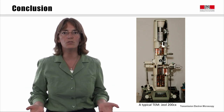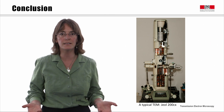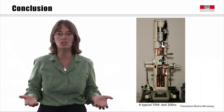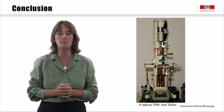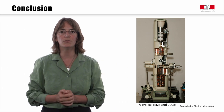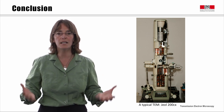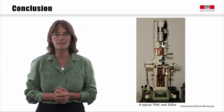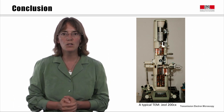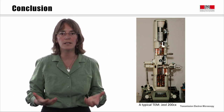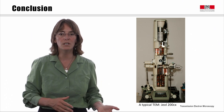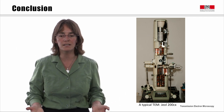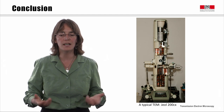In today's module we have seen the three main blocks of lenses: first, to produce the image of the gun crossover and illuminate the specimen; second, to make the first image of the specimen via the objective lens; and finally, to take the image or diffraction pattern and view it on the recording device. Next time, we will look at the complete microscope at work in both diffraction mode and imaging mode, and see how we can control those lenses to obtain images and diffraction patterns.